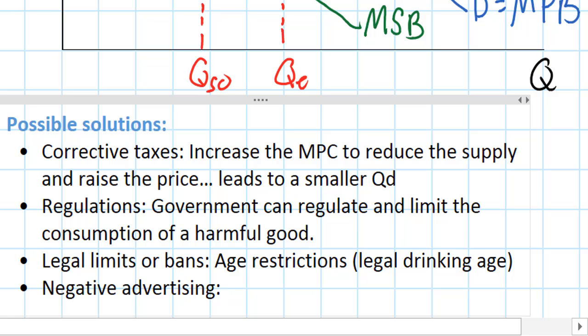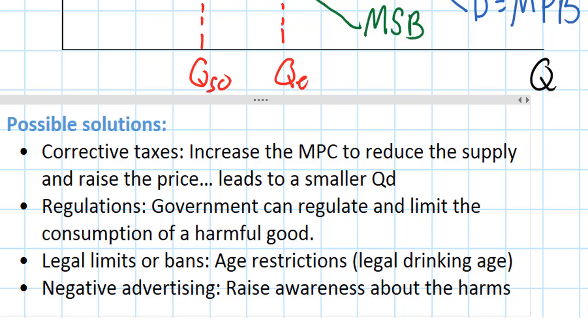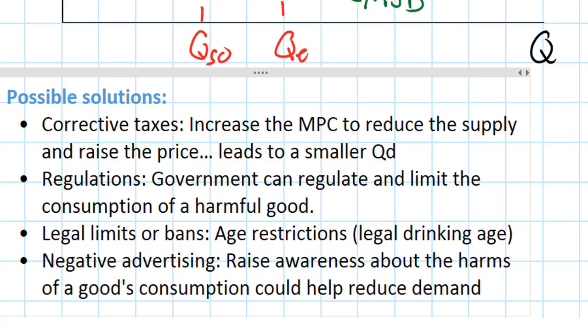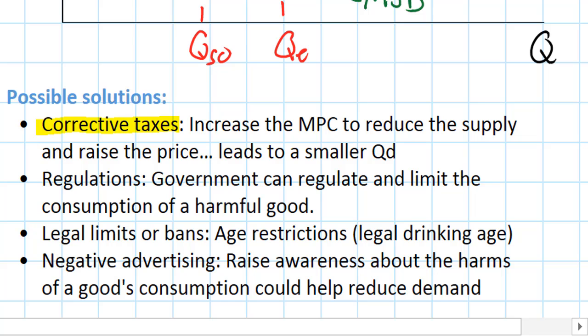There's some market-oriented approaches as well. Negative advertising to raise awareness about the harms of a good's consumption could help reduce demand. These are just some of the possible solutions to negative consumption externalities. Corrective taxes raise the marginal cost of producing the good, reducing the supply and reducing the quantity demanded. Regulations can limit how much of a good is produced or consumed. Legal age limits or bans—these are simple ways to reduce the market size, and negative advertising can help reduce demand for harmful goods.